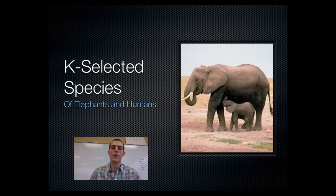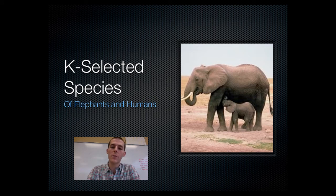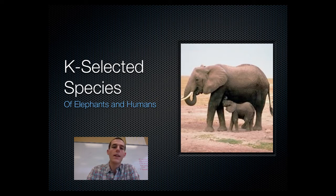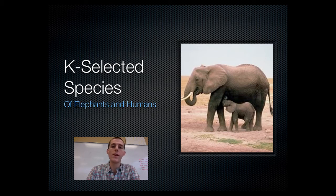Now let's talk about two different types of species: K-selected species and R-selected species. K-selected species reproduce very slowly, give a lot of care to their young, and put a lot of investment into raising just a few kids in their lifetime. They reproduce slowly until their population reaches the carrying capacity K, and that's why they're known as K-selected species — because they have regard for the carrying capacity of an environment.